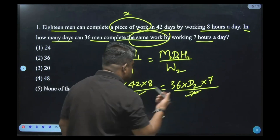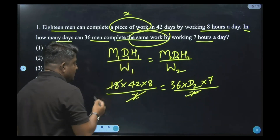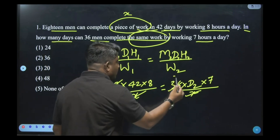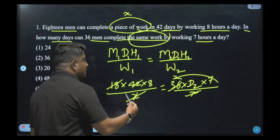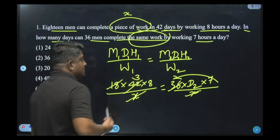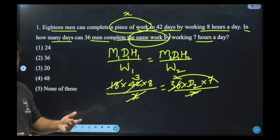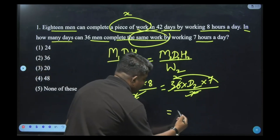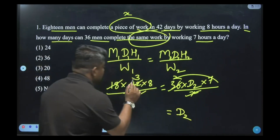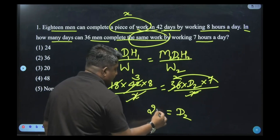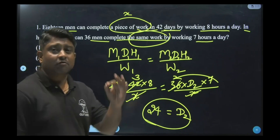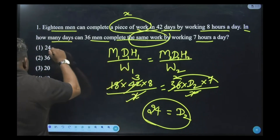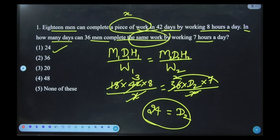After cancelling x on both sides, we simplify: 18 and 36 cancel to give ½, and 42 and 7 simplify. Working through the arithmetic: D₂ = 3 × 8 = 24. So in 24 days, the second group will complete the same piece of work. Option number 1 is correct.